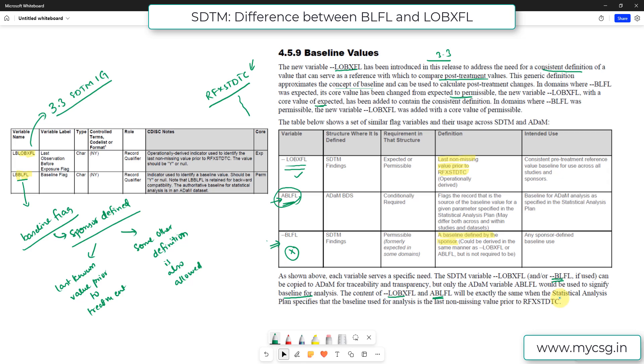So ABLFL will be exactly the same when the statistical analysis specifies that the baseline used for the analysis is the last known value prior to RFXSTDTC. So there can be studies in which the definition is still the same as your LOBXFL, in which case your LOBXFL and ABLFL in your ADAM will share the same values.